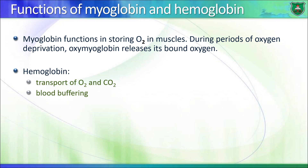The oxygen-bound form of the protein is known as oxymyoglobin, and the oxygen-free form is known as deoxymyoglobin. Hemoglobin, on the other hand, functions mainly in transporting gases — primarily oxygen — from the lungs to peripheral tissues, and on the way back it carries CO2 to the lungs where it gets exhaled. Hemoglobin also functions in blood buffering; being a very dominant protein in blood, it can maintain blood pH by binding to and releasing protons.